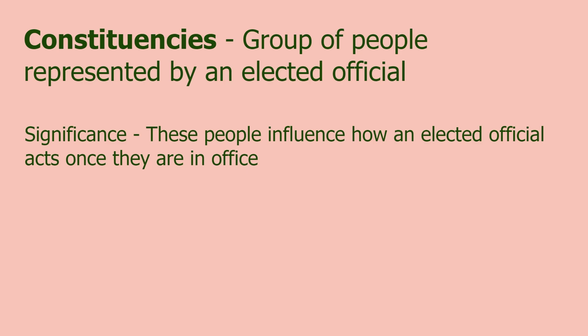Constituencies: the group of people represented by an elected official. These people influence how an elected official acts once they are in office. The group that a politician will pay attention to most is their constituency, so congresspeople are very responsive to people in their area. People in their area can send them letters and things like that, and they're usually very responsive because they want to keep popularity within their constituency.